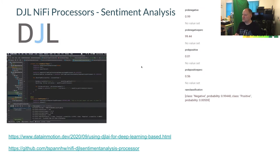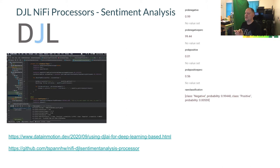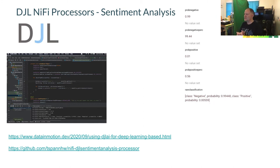Another processor I wrote using DJL is for sentiment analysis. What's nice with DJL is I can switch between PyTorch models and MXNet models — for example, to test performance or when a model changes. It outputs attributes without changing your main text, giving you the probability of negative sentiment, the percentage, same with positive, plus the raw classification. It's fully documented and open source — extend it or put in a different model if needed.